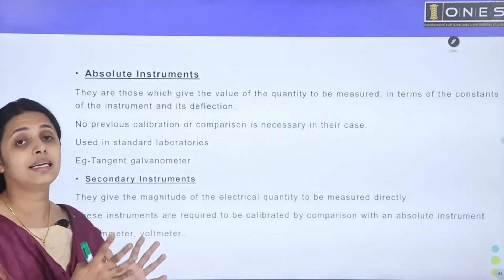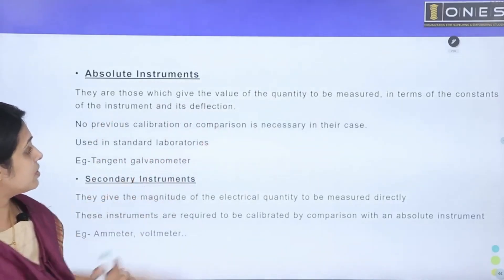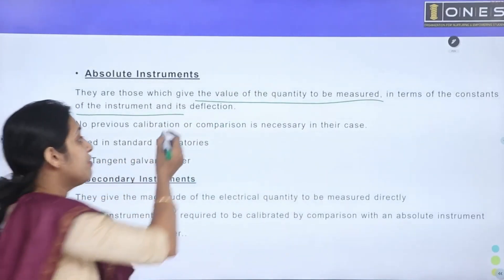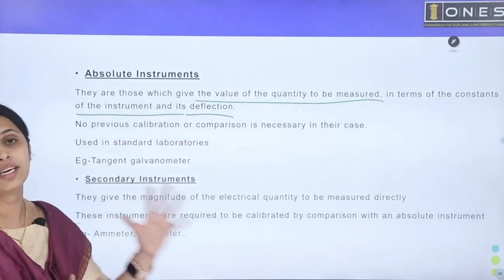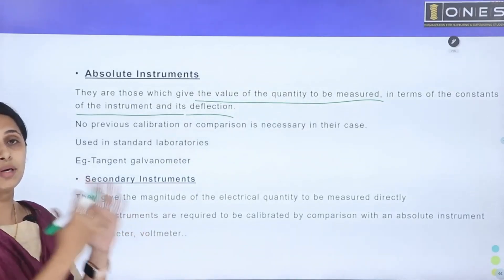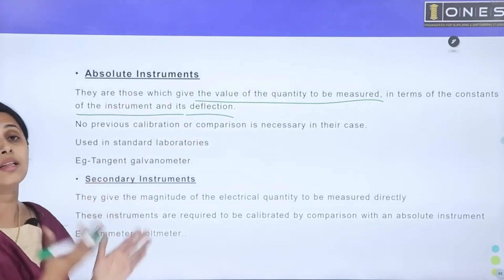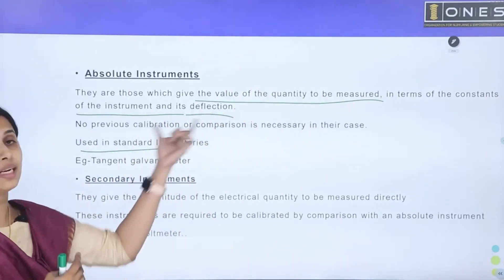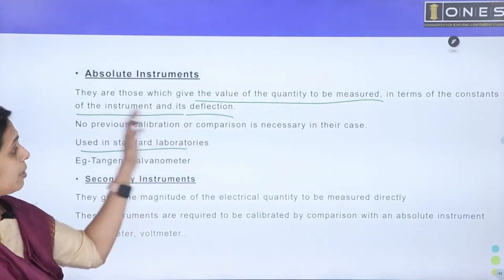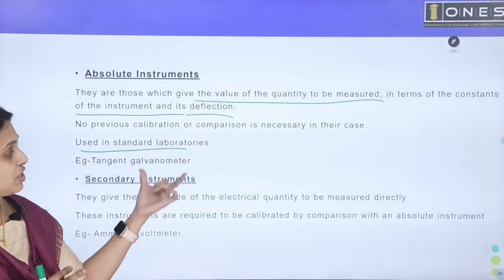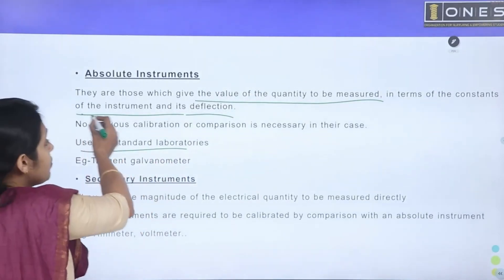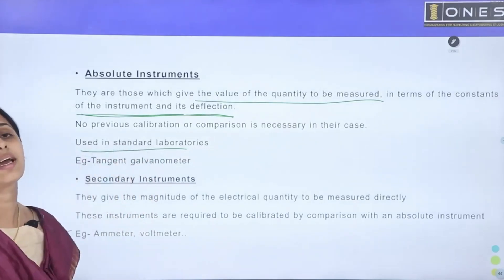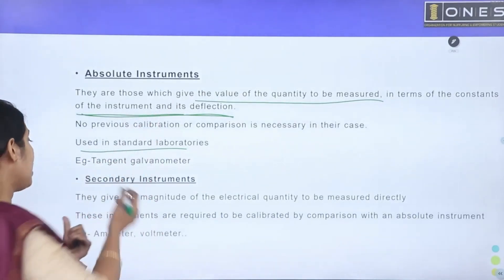Absolute instruments give the value of the quantity to be measured in terms of the constants of the instrument and its deflection — no prior calibration is needed. They are used as standard instruments in laboratories. An example is the tangent galvanometer.